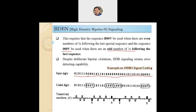Then we observe a group of four zeros, and we need to use a special code to replace those four zeros. Since we don't have any previous special sequence before these four zeros, it is left to the designer which code to use — we may begin with either one. Here we have chosen 000V. After that we observe: 1, then 0, then two ones, then 0, then 1.